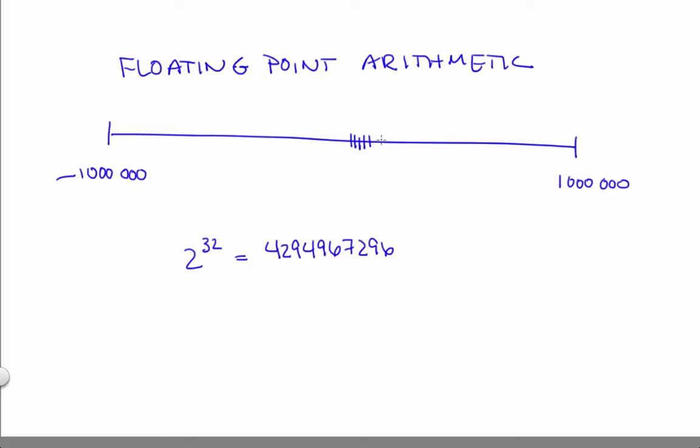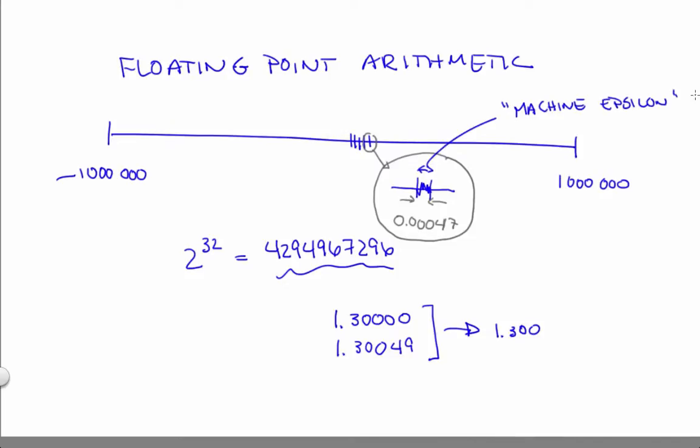Each of those little slots is 2 million over 2 to the 32 wide, which is 0.00047 wide. Now what that means is that all the numbers in this range are all stored as the same 32-bit long binary pattern. This box size here is often called the machine epsilon. And as you can well imagine, if you're doing arithmetic with numbers that are comparable to, or worse, smaller than that box size, the errors in your calculations are going to be large.